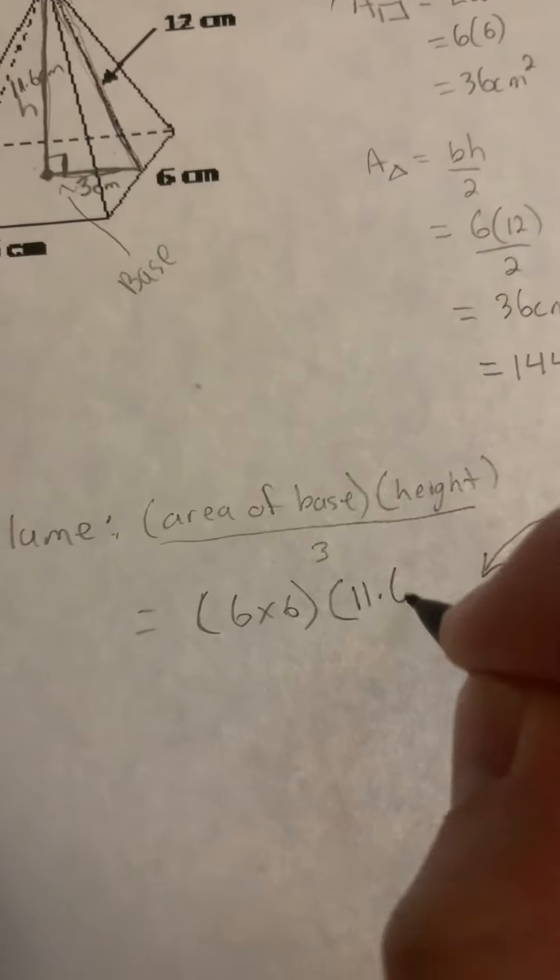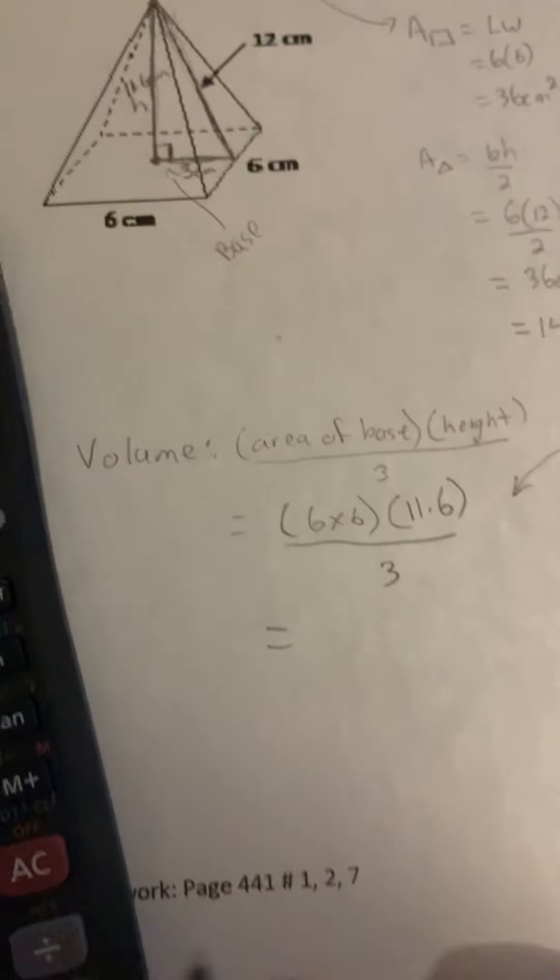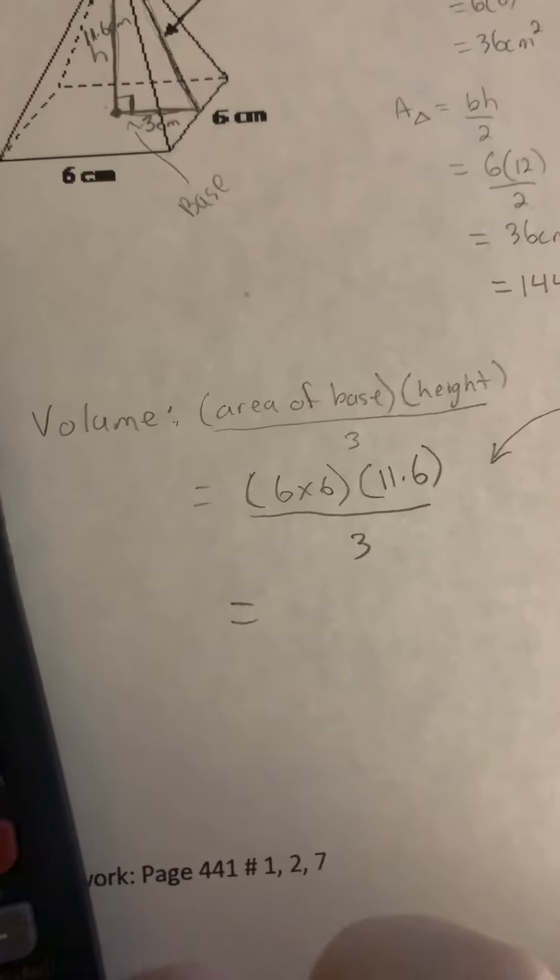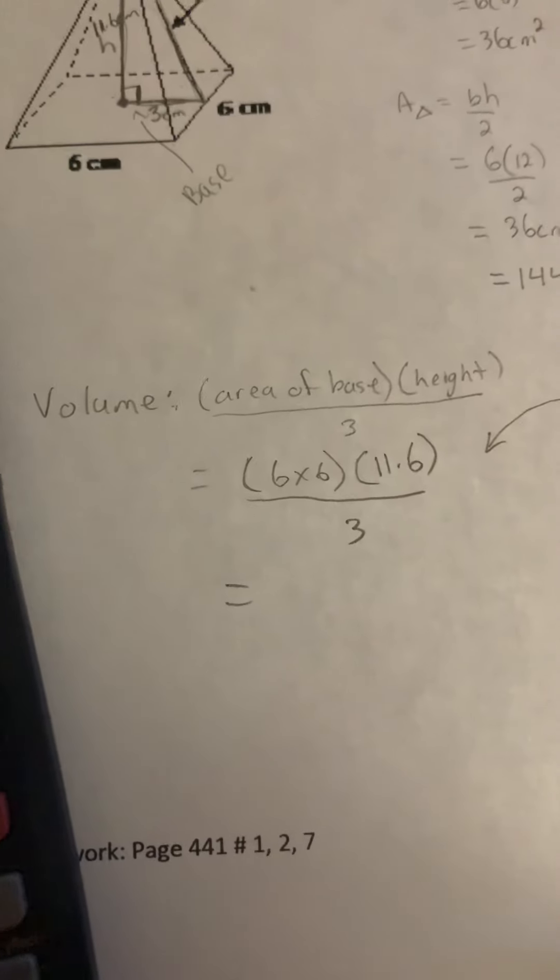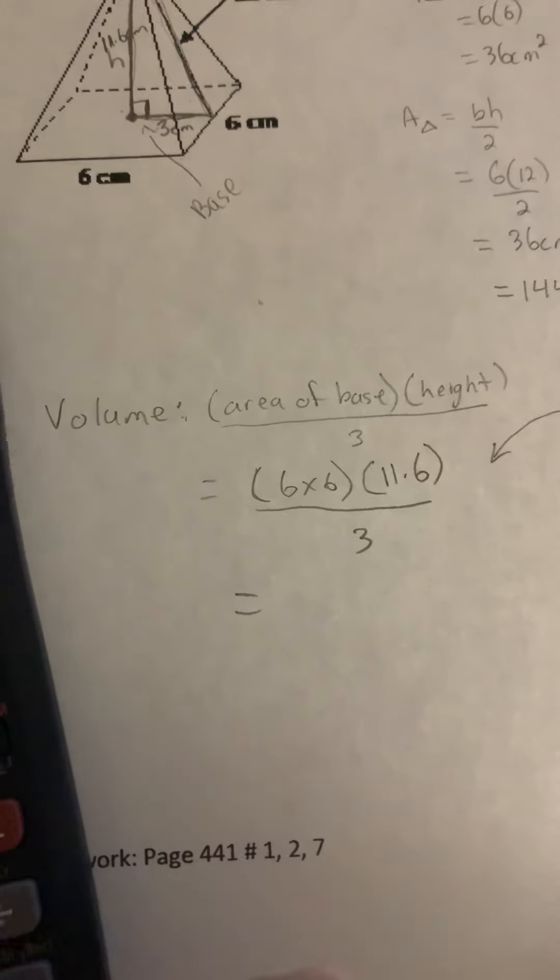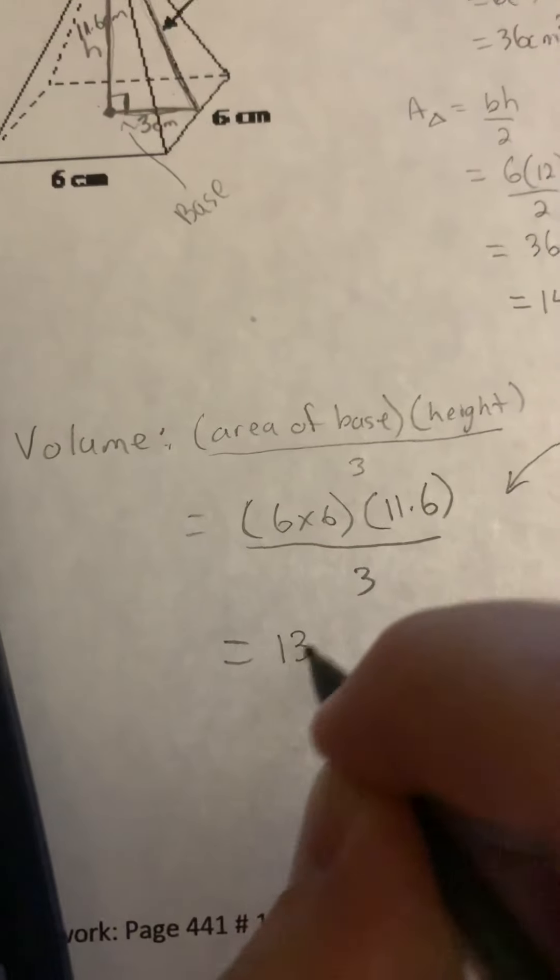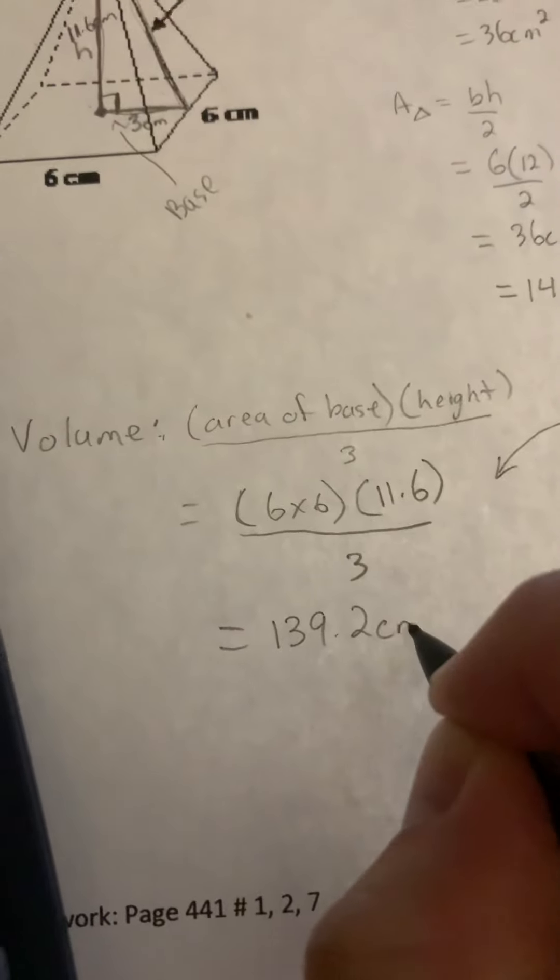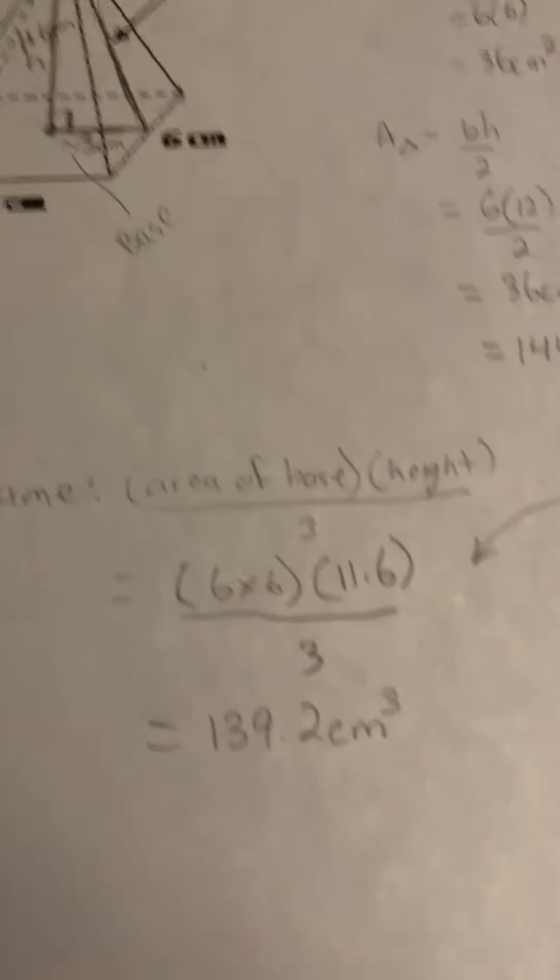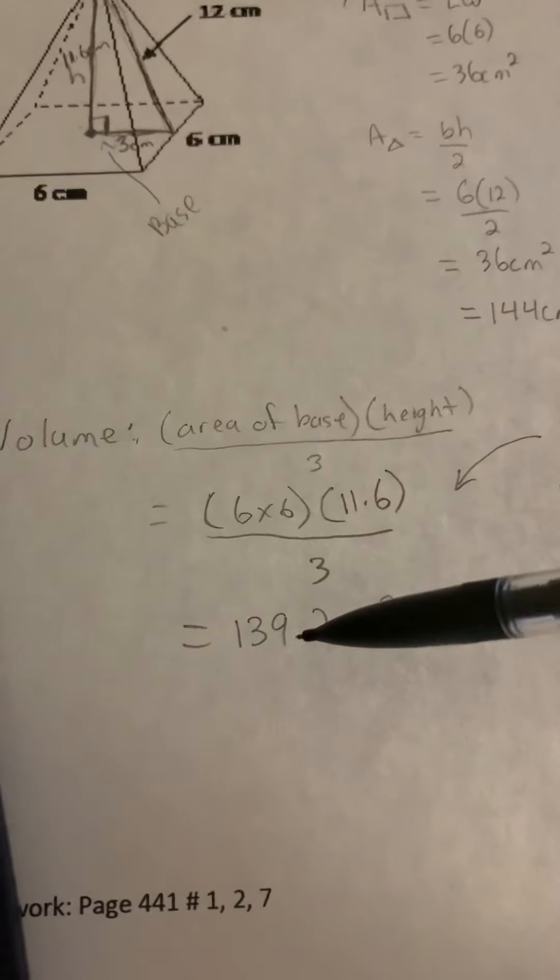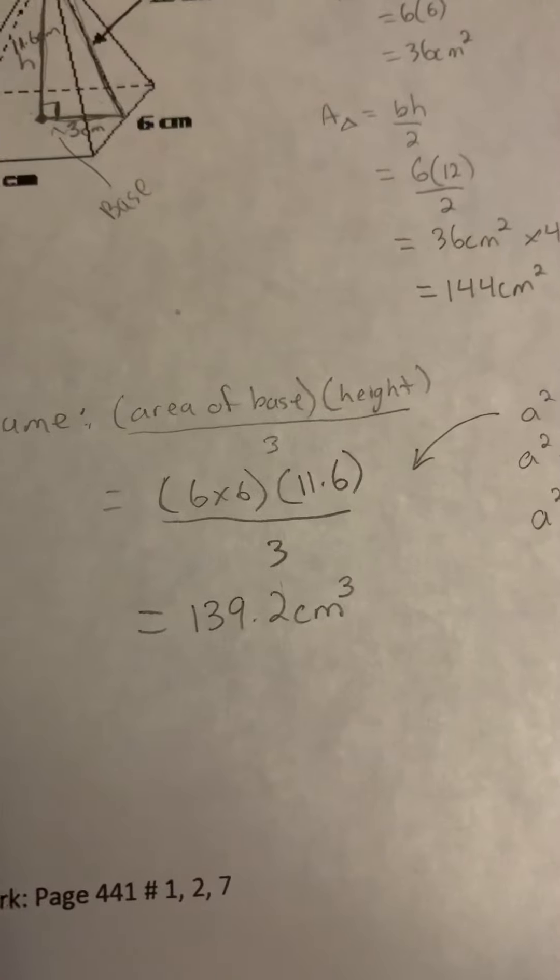So 11.6 and then divide by 3. 6 times 6 times 11.6 divided by 3. So we get 139.2 centimeters cubed. It doesn't say to round, but if it said round to the nearest whole number, it would be 139. If it said to the nearest tenth, it would be 139.2.